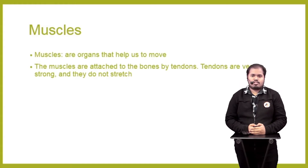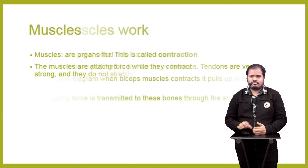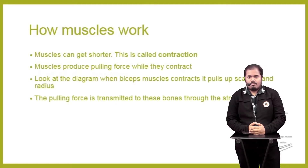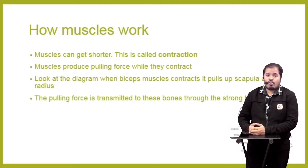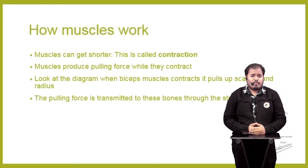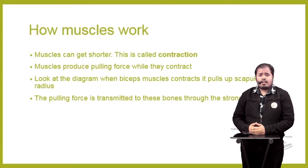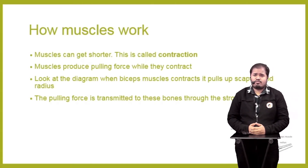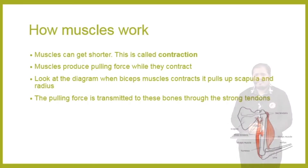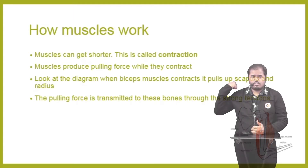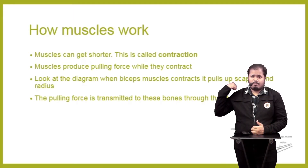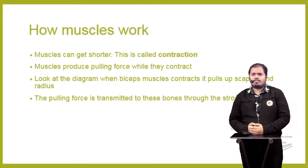How does a muscle work? Muscles can get shorter — this is called contraction. Muscles cannot get longer unless a force is applied on them. Muscles produce a pulling force while they contract. Looking at the diagram, when the bicep muscle contracts it pulls up the scapula and radius.